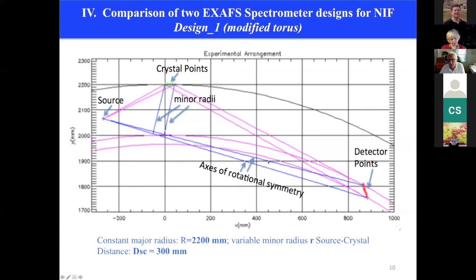So then you define for each crystal point a new axis of toroidal symmetry and a minor radius. You see that the minor radius varies both in magnitude and in direction with respect to the major radius. So this is a design where the major radius is still constant, but the minor radius is no longer constant and varies along the crystal surface in magnitude and direction.